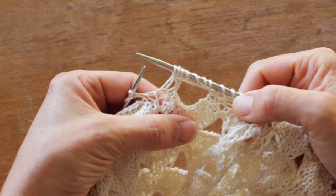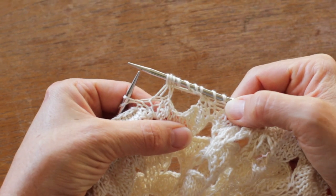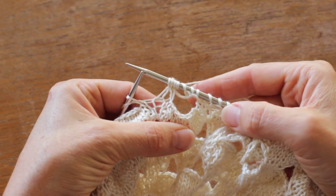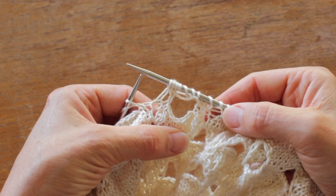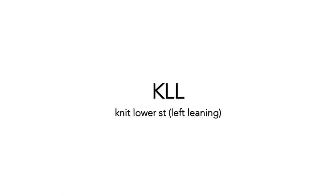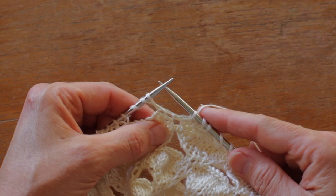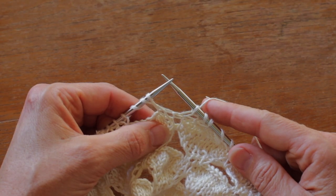Hi everyone, I wanted to give you a tutorial for the KLL and the KLR in the Cloud Kisses shawl. We'll start with the KLL — it's knitting the lower left stitch, which creates a left-leaning stitch.